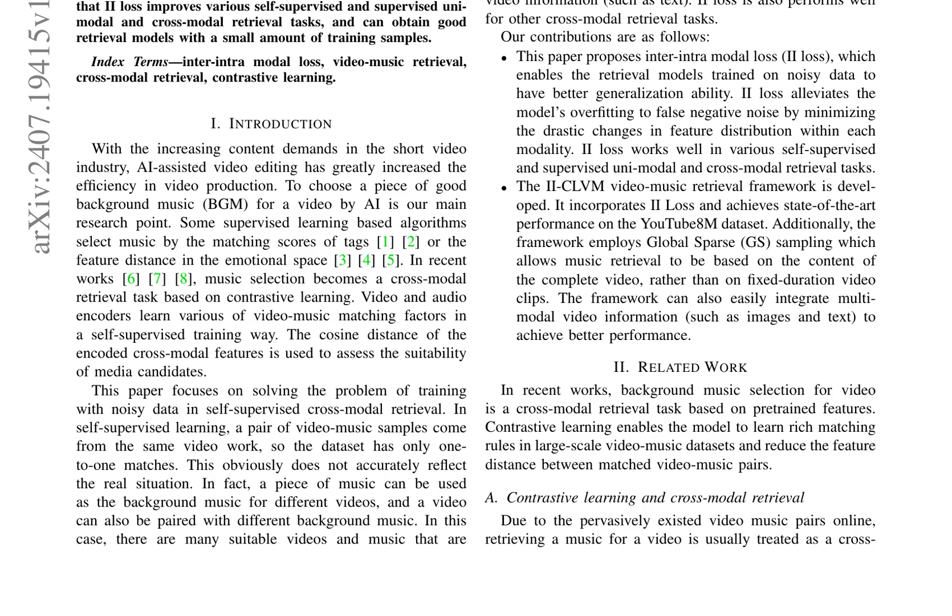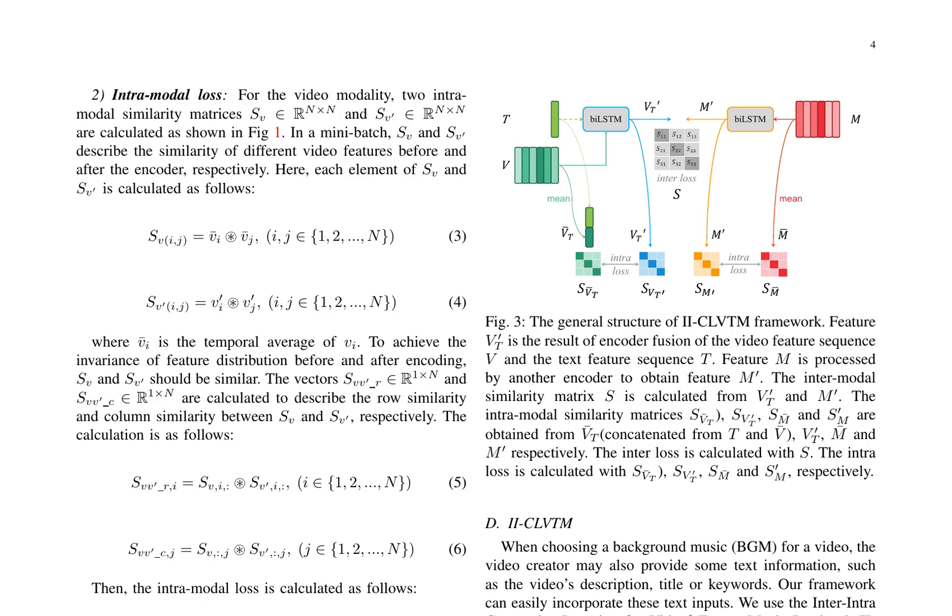Separate sequence encoders are used to extract temporal information from the feature sequences. The intermodal loss function increases the similarity between positive sample pairs and decreases the similarity between negative sample pairs. The intramodal loss function preserves the relative feature distribution of the samples, preventing false negative samples from moving away from their corresponding positive samples.